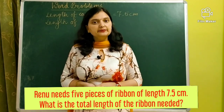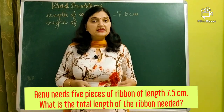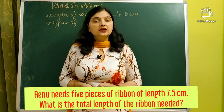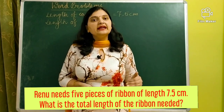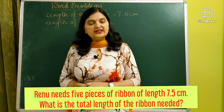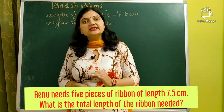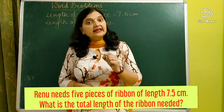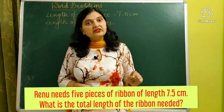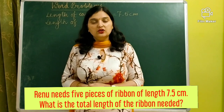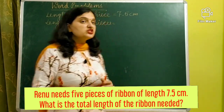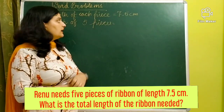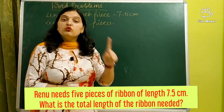Let us take our first example. Renu needs five pieces of ribbon of length 7.5 centimeters. What is the total length of ribbon needed? She needs five pieces, and the length of each piece is 7.5 centimeters. So what is the total length of the ribbon she needed? The length of one piece is 7.5 centimeters.